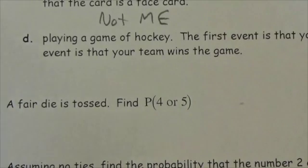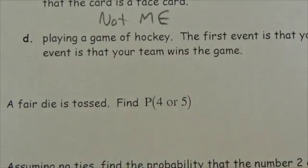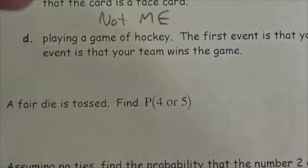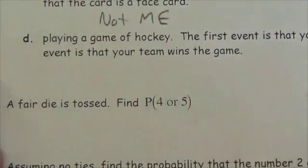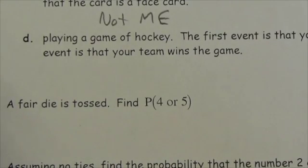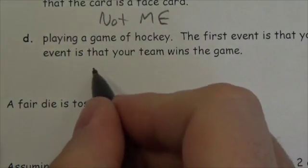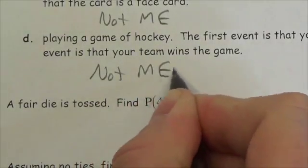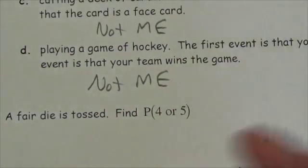How about playing a game of hockey? The first event is that your team scores a goal, and the second event is that your team wins the game. Are these mutually exclusive? Is it possible that you can win the game and not score a goal? Think about the only situation where you might consider that — what if we don't score and the other team doesn't score? Well, then you've tied; you didn't win the game. You need to score a goal to win the game. So these are not mutually exclusive events.